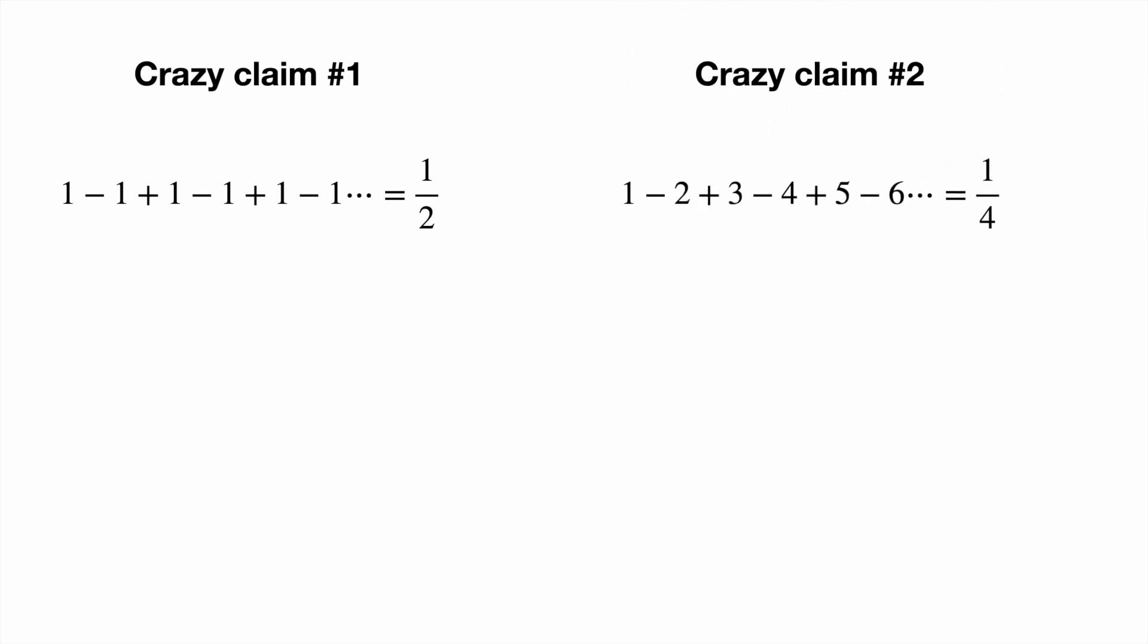Crazy claim number 2: 1 minus 2 plus 3 minus 4 plus 5 minus 6 and so on is equal to one quarter. This claim is also crazy because the series is constantly alternating between positive and negative integers, so how could it possibly be equal to one quarter?